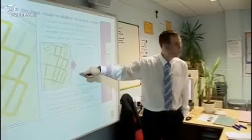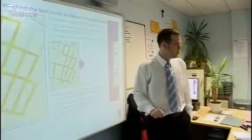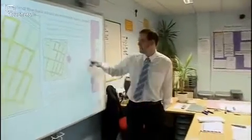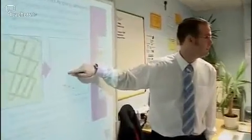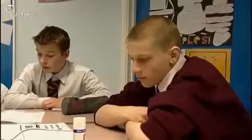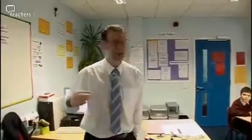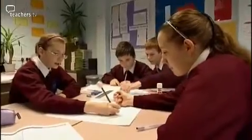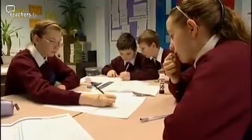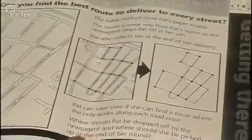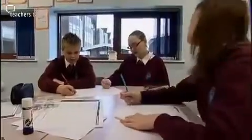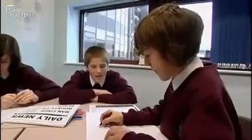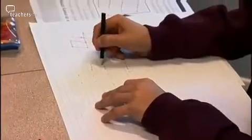Expanding on the exercise, Daniel gives the class a task on a larger scale. The problem I'm going to give you is: can you go down every single street, but only down each street once? You don't want to waste time on a paper round by going back down the same street a second time. The activity introduces the students to network diagrams and how mathematics can be used to aid efficiency. They attacked the activity exactly how I thought they would — just by trial and error, starting somewhere and trying to do it, and if they can't do it that way, starting somewhere else.